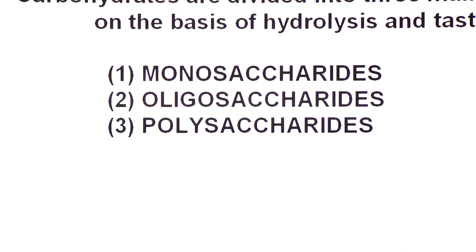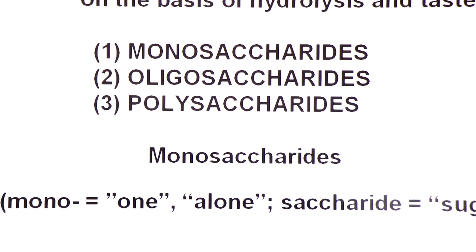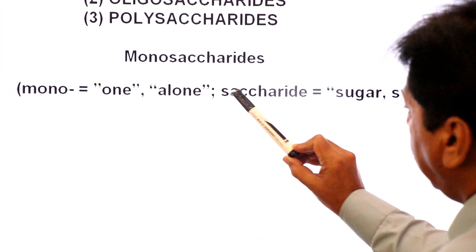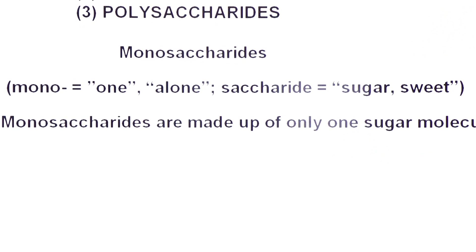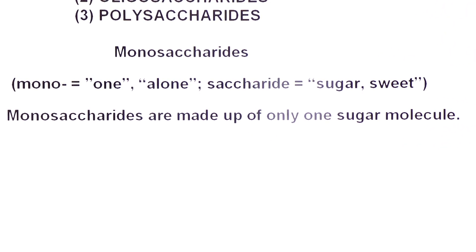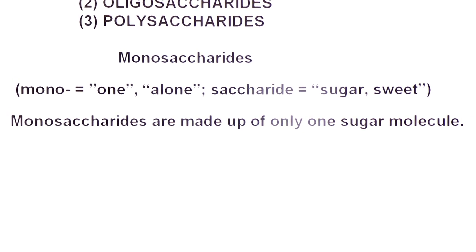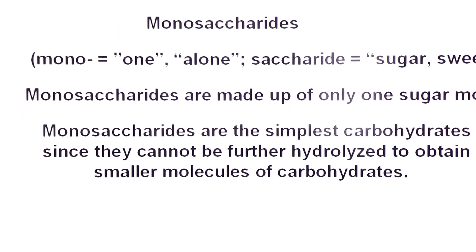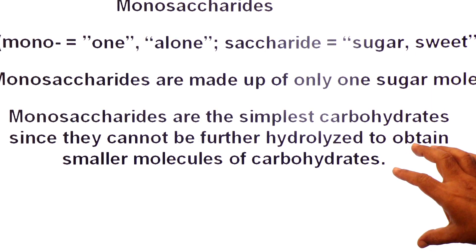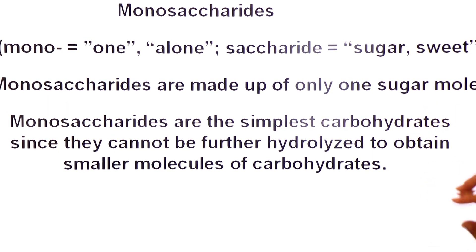The three groups are monosaccharides, oligosaccharides, and polysaccharides. In today's lecture we will focus on monosaccharides. The word monosaccharide comes from 'mono' meaning one or alone, and 'saccharide' meaning sugar or sweet. Monosaccharides are made up of only one sugar molecule — they are the simplest carbohydrates and cannot be further hydrolyzed to obtain similar carbohydrate molecules.